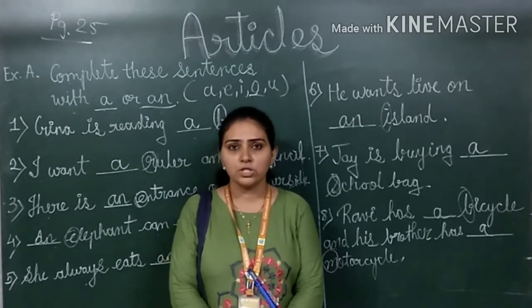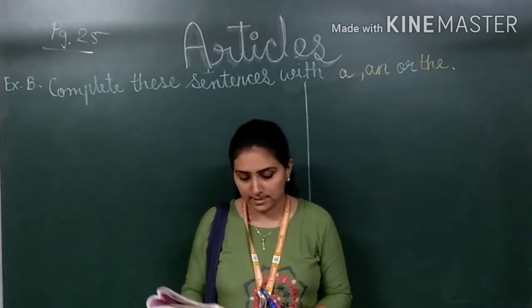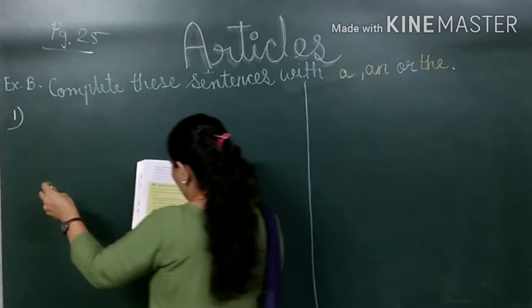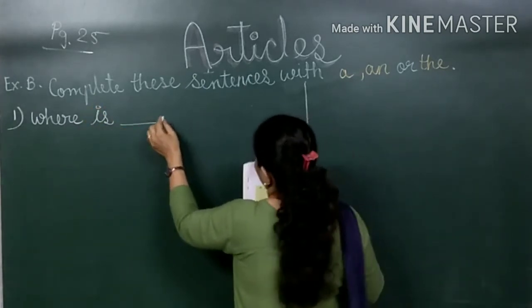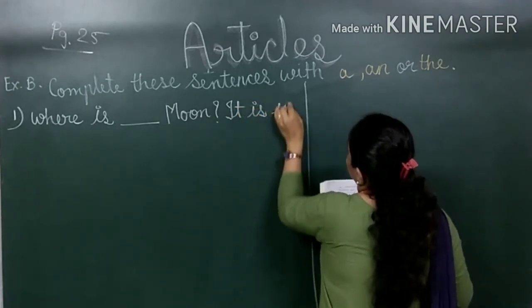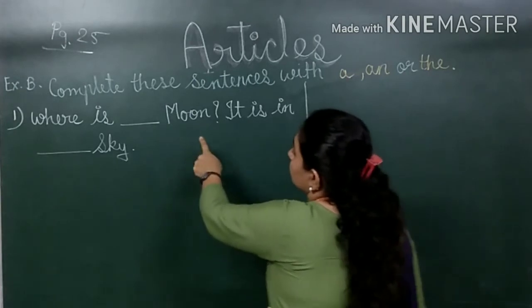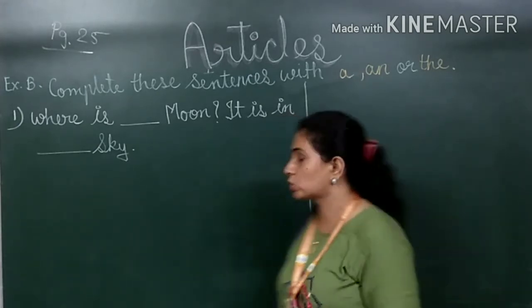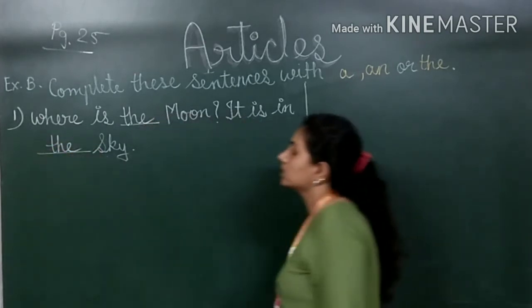Now turn to page number 26. Let's begin with Exercise B, where you have to complete the sentences with 'a', 'an', or 'the'. The first question is: Where is blank moon? It is in blank sky. 'Moon' is a particular thing — there is only one moon — so we use 'the moon'. Similarly, there is only one sky, so: It is in the sky.